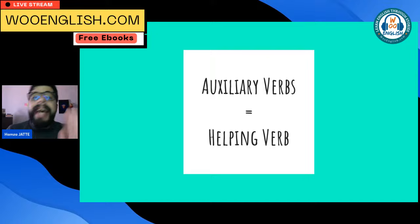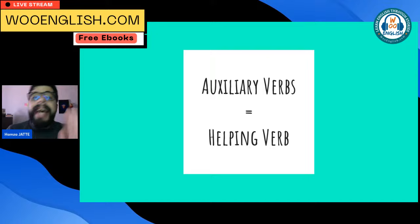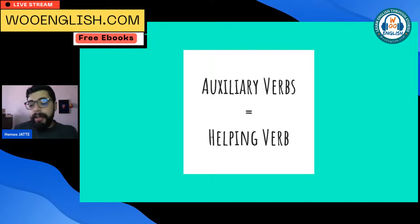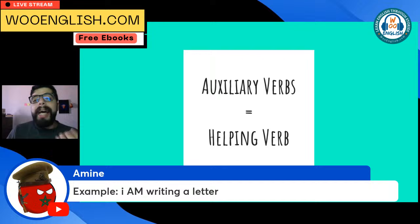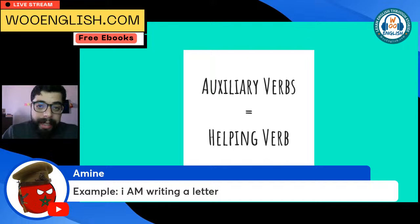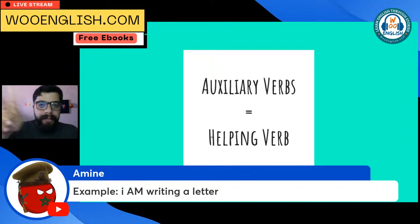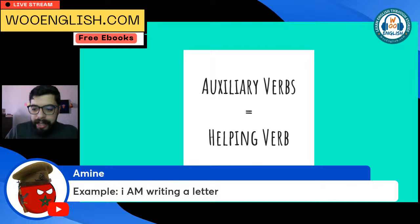For example: 'I am a teacher' — here the verb to be is the main verb because there is no other verb. But in 'I am writing a letter,' the main verb is 'write' and the verb 'am' is just helping it. So the verb to be can be either the main verb or the auxiliary verb depending on the sentence. Don't forget to like this video so it's suggested to other people, and subscribe if you haven't.